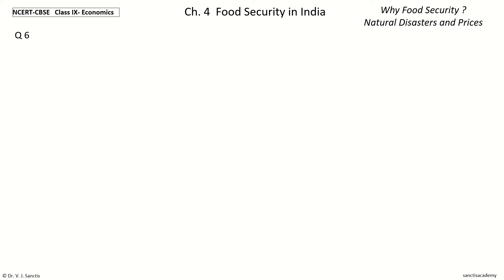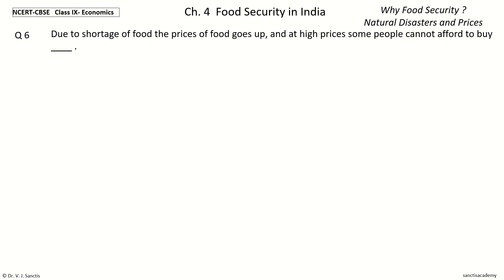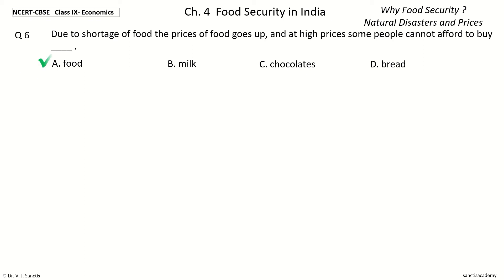Question 6: Due to shortage of food, the prices of food goes up. And at high prices, some people cannot afford to buy dash. The options are: food, milk, chocolates, bread. And the answer is food. So, due to shortage of food, the prices of food goes up, and at high prices, some people cannot afford to buy food.